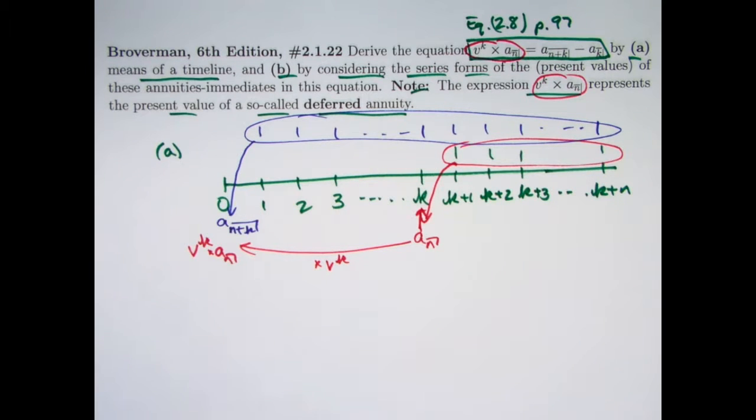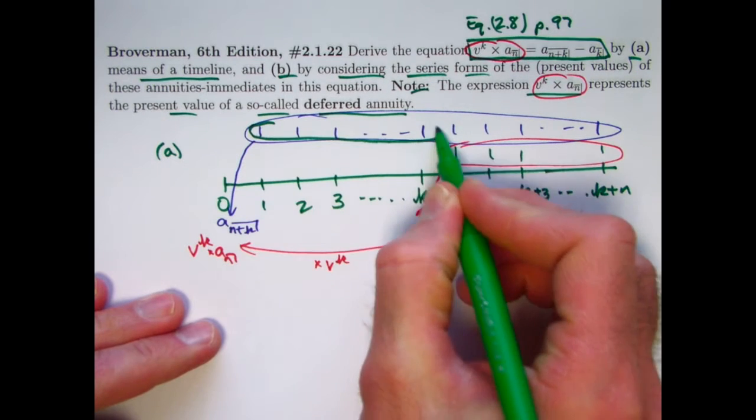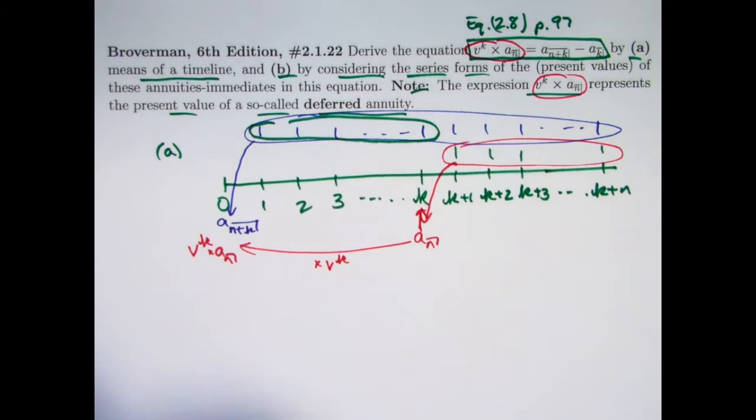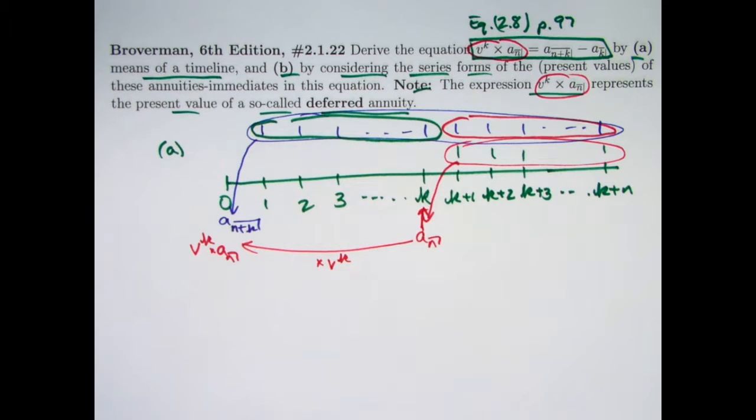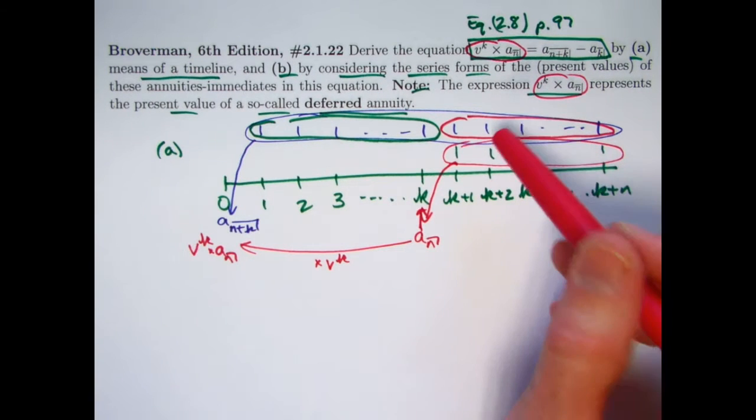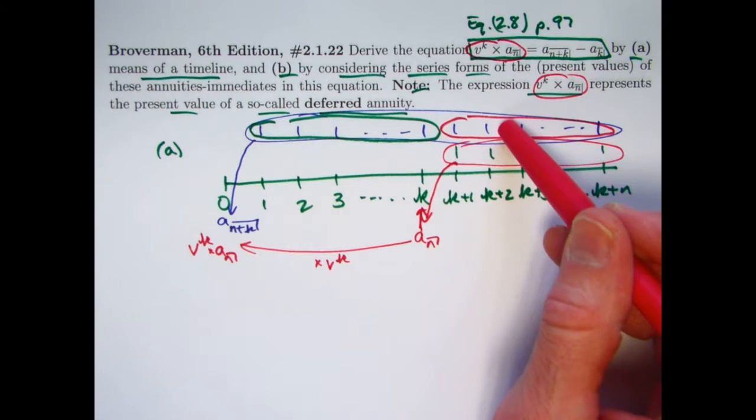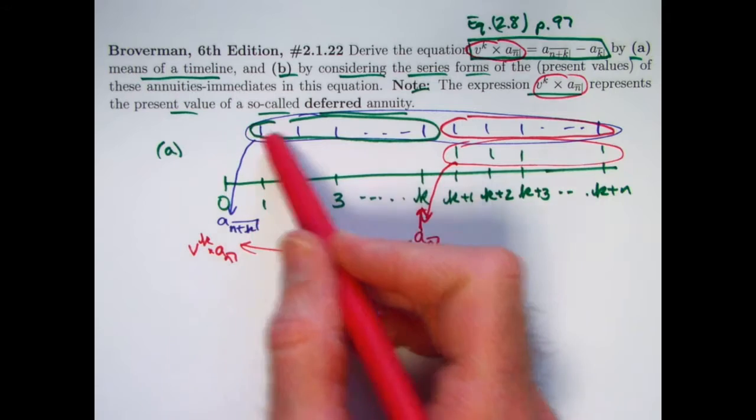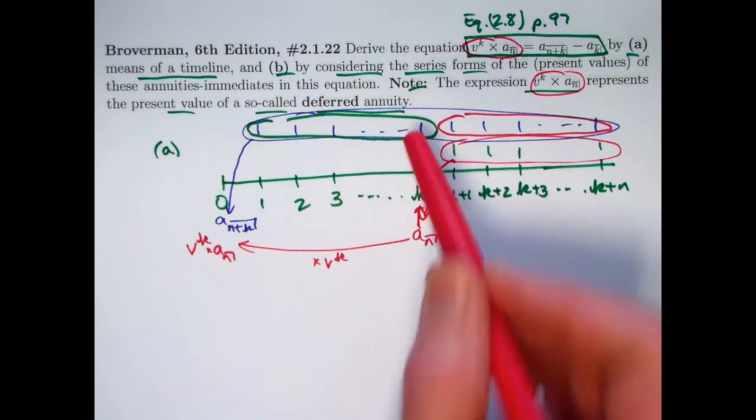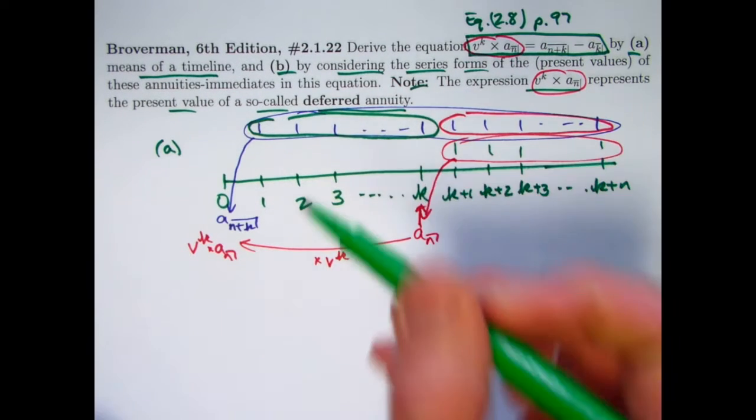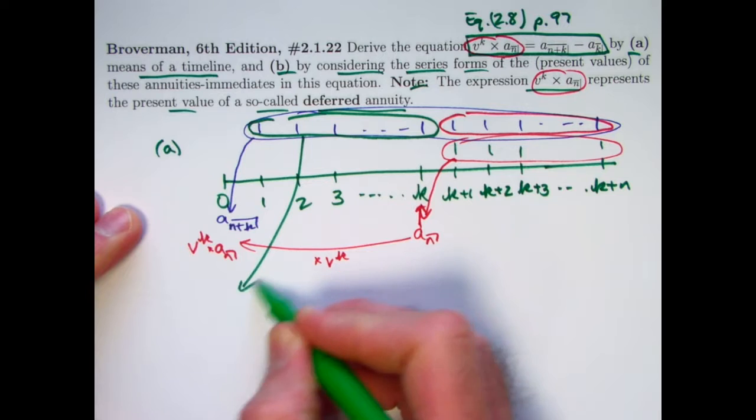But hey, we can break this up into two pieces. We can break it up into the first K payments and the last N payments. We can say that the present value of the last N payments could be thought of as the present value of all the payments minus the present value of the first K payments. So it's almost like the equation reveals itself.